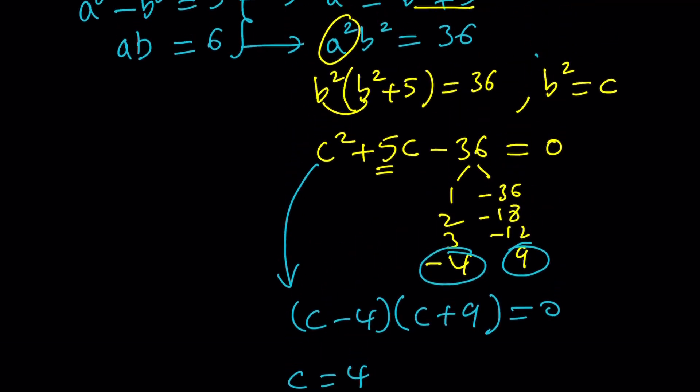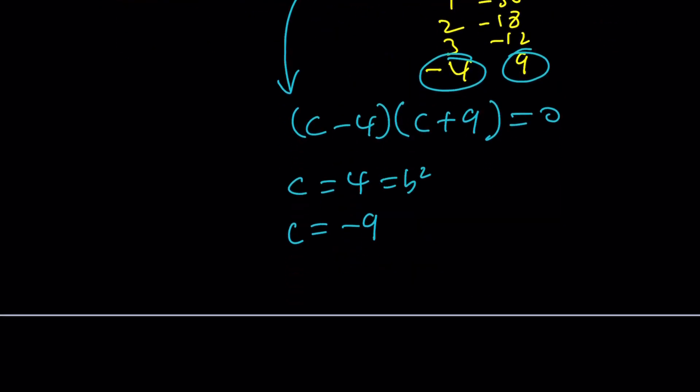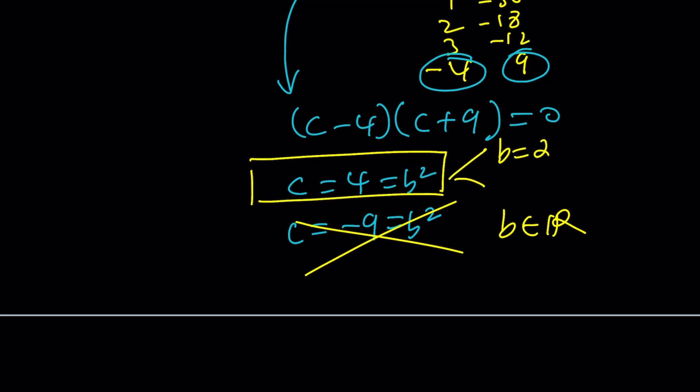By factoring this trinomial, we're able to get the solutions c equals 4 and c equals negative 9. But c is b squared. Remember that. So let's back substitute. b squared equals negative 9 is not going to give us any real solutions. Remember, a and b are real numbers. So the second equation is impossible. Therefore, we end up with the first one. And this gives us two answers. b is either 2 or negative 2. And both of them are real numbers.